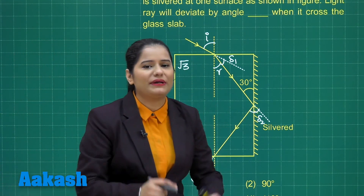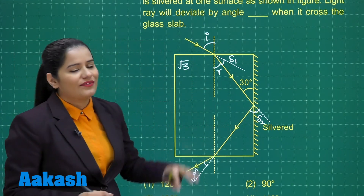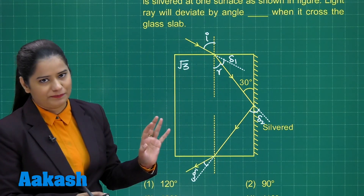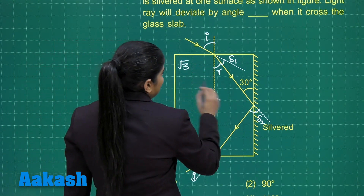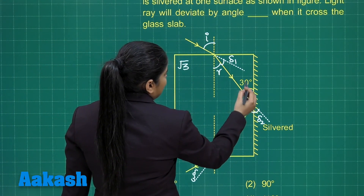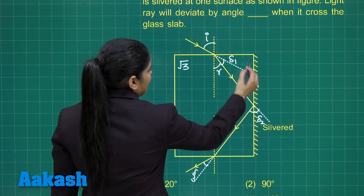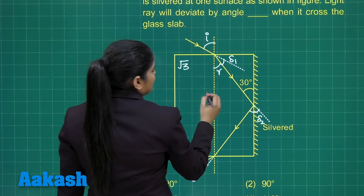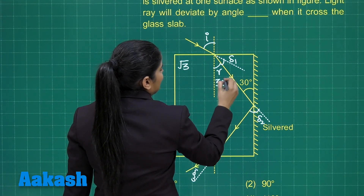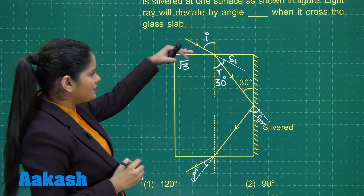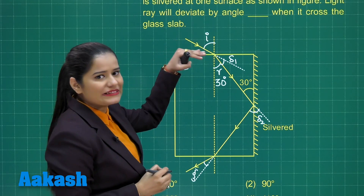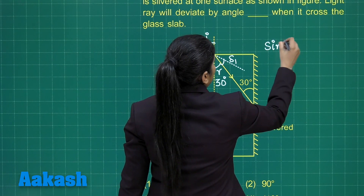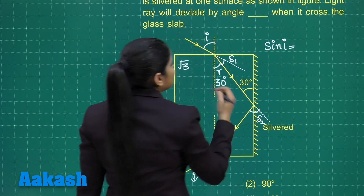When we add them up, we will get the net deviation caused when the light ray travels through this glass slab. Here we can see that this angle is 30 degrees and these two surfaces are parallel. This is the normal, which is parallel to this surface of the glass slab. So R will simply be 30 degrees. At this surface, if I use Snell's law,